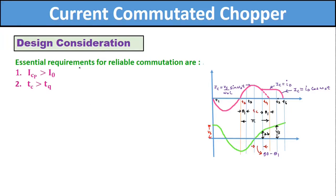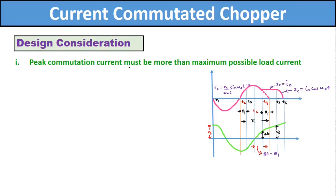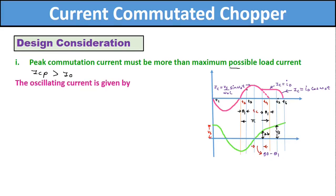Under the design consideration of the current commutated chopper, the essential requirements for reliable commutation of the main thyristor are: first, the peak capacitor current ICP should be greater than the maximum possible load current I0; and second, the circuit turn-off time Tc should be greater than the turn-off time of the main thyristor Tq. The capacitor current is sinusoidal, that means it is an oscillating current.